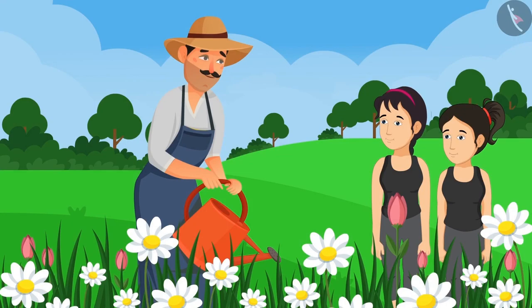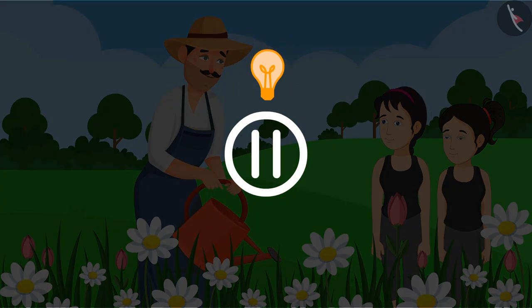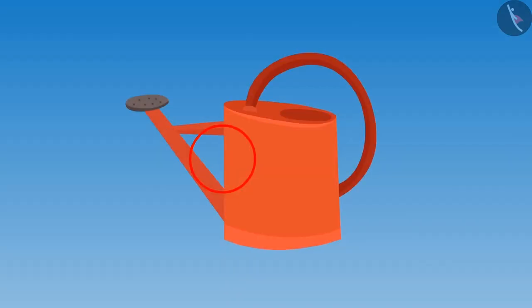On the way back, Mina saw the watering can held by the gardener. She told Riva, Riva, do you know which angle is made in this water can? You can pause the video if you want and give it some thought.